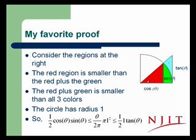We'll consider the second one first, and this is my favorite proof. Let's consider the circle of radius 1 on the right and these triangles inside. There's a red triangle and a red-green-blue combined triangle. And there's a sector of a circle made up by the red and the green triangles. Clearly the red region is smaller than the red plus the green, and the red plus the green is smaller than all three colored regions together.